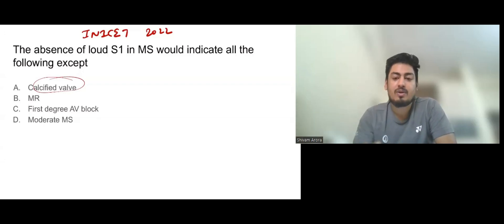So calcified valve: soft S1. MR: soft S1. First degree AV block: soft S1. Moderate MS: moderate MS or severe MS both have loud S1, unless there is calcified valve. Moderate MS is usually not calcified. Severe MS: after that calcification starts. So the answer is moderate MS.